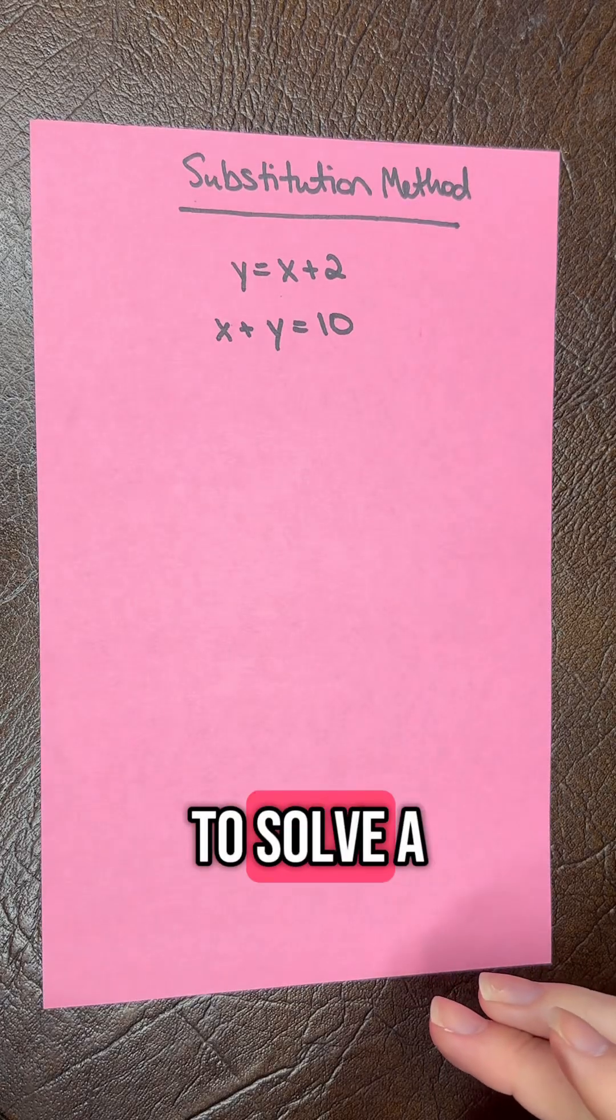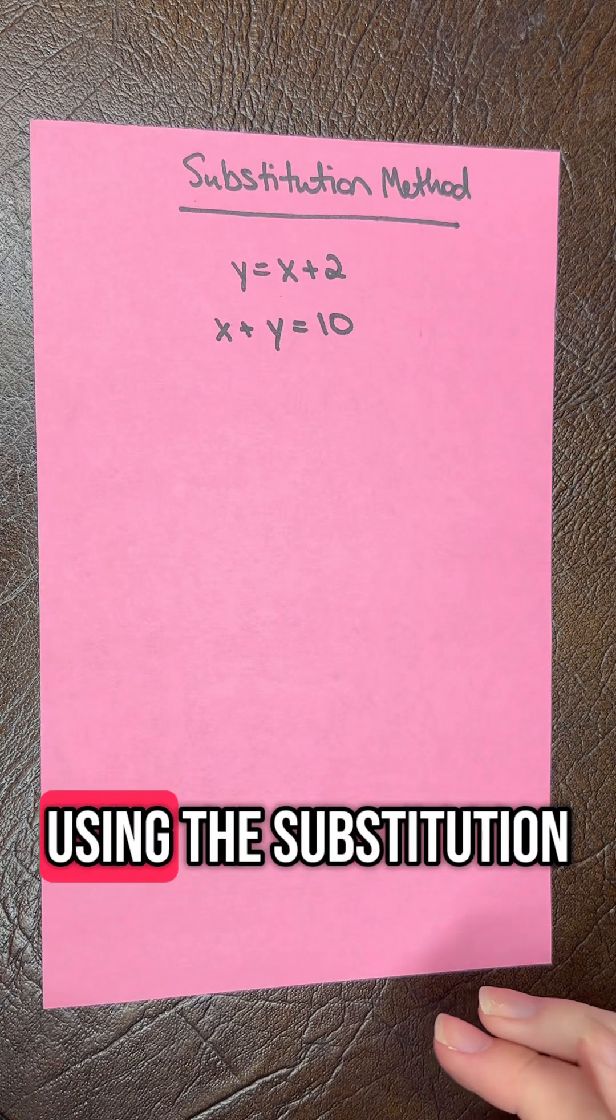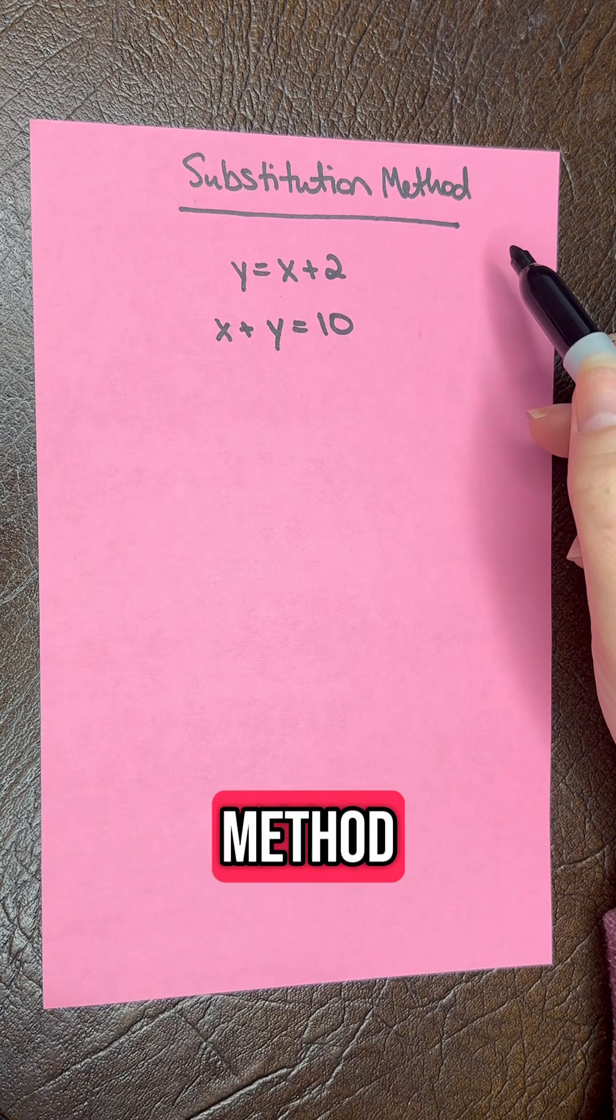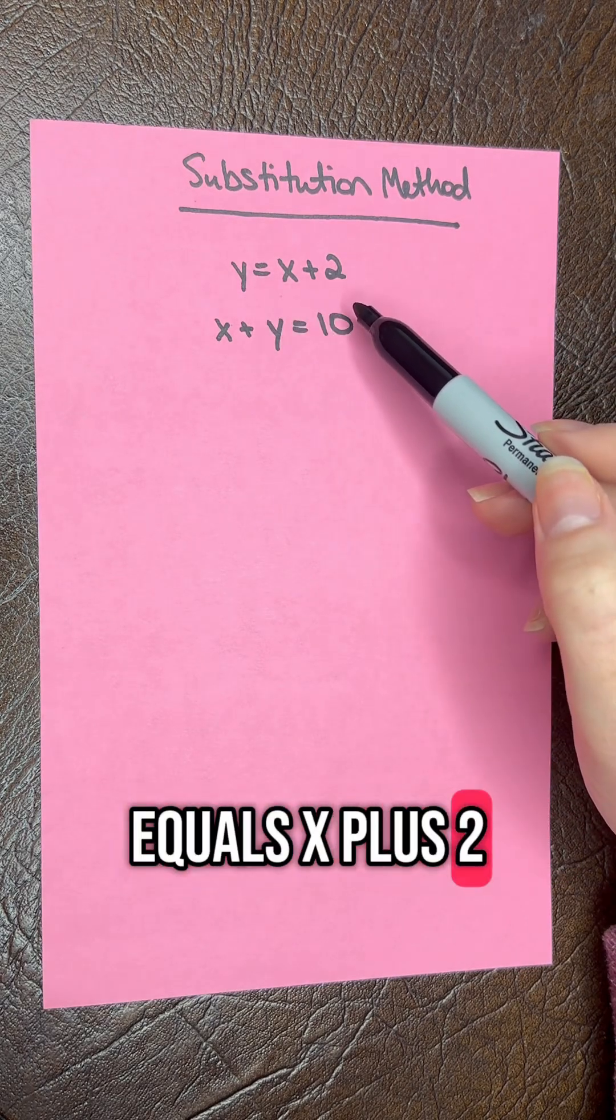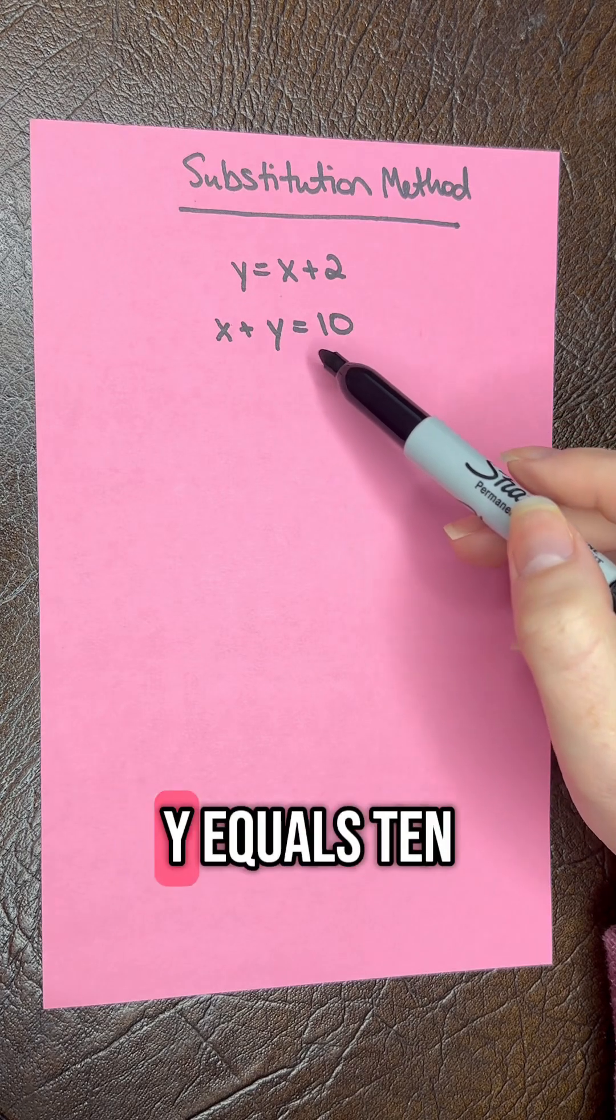Today we're going to learn how to solve a system of equations using the substitution method. So we have two equations here. We have y equals x plus 2, and then we have x plus y equals 10.